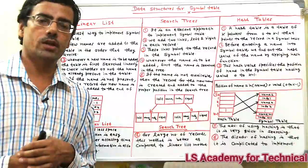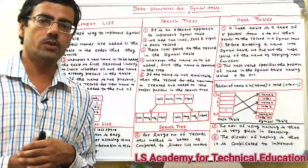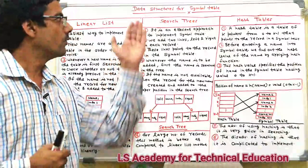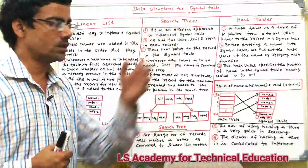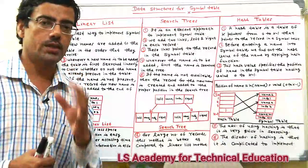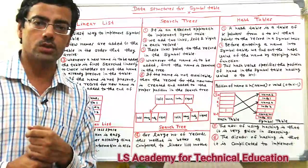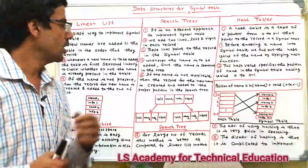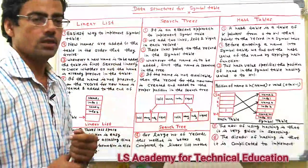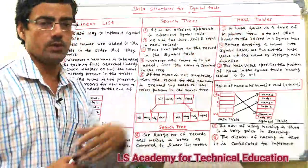Hello friends, welcome to LS Academy for Technical Education. Today's video will discuss the various data structures used for the symbol table. There are basically three types of data structures used in the symbol table: the first one is the linear list, the second one is the search tree, and the third one is the hash table.